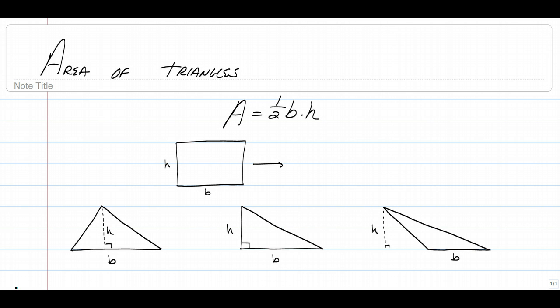Area of a parallelogram is base times height. So I'm going to show you using a parallelogram, or in this case a rectangle, how we come up with the triangle formula of half the base times height. And it's pretty simple.